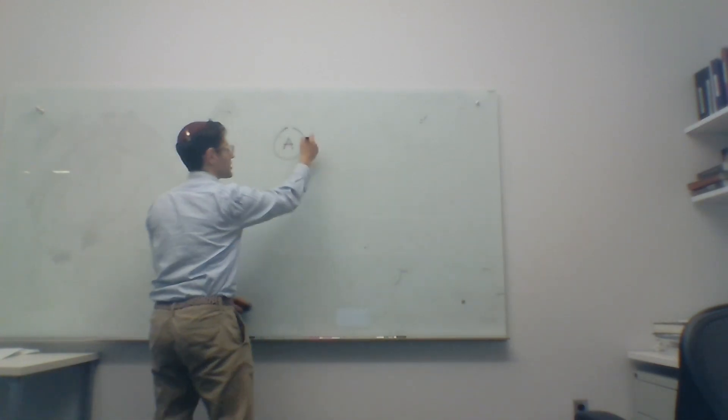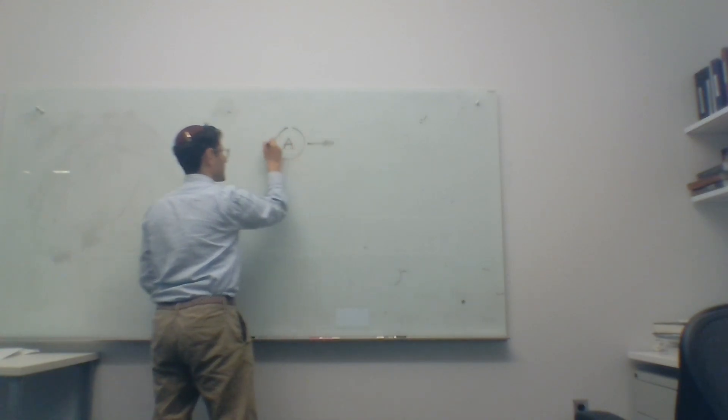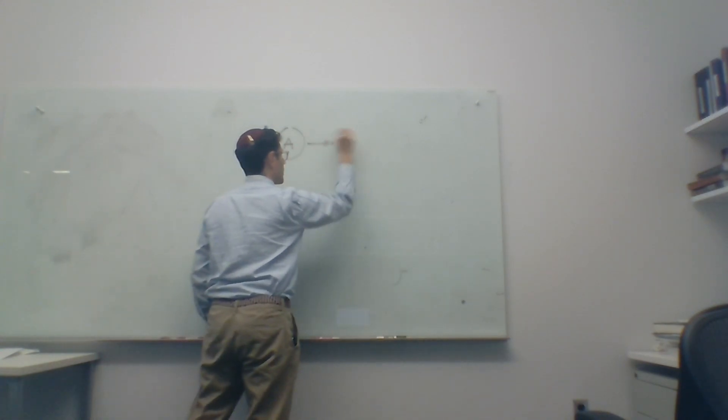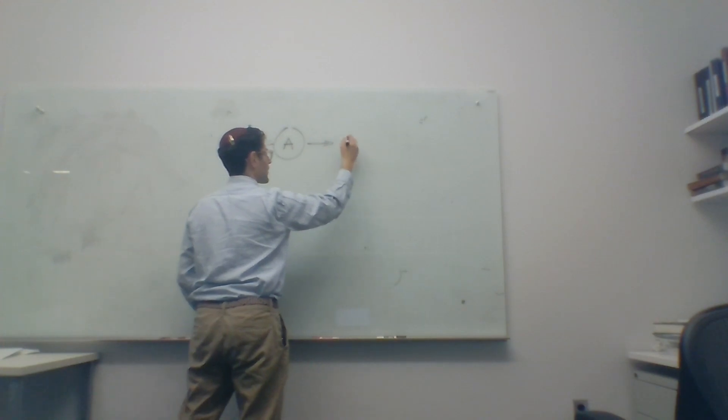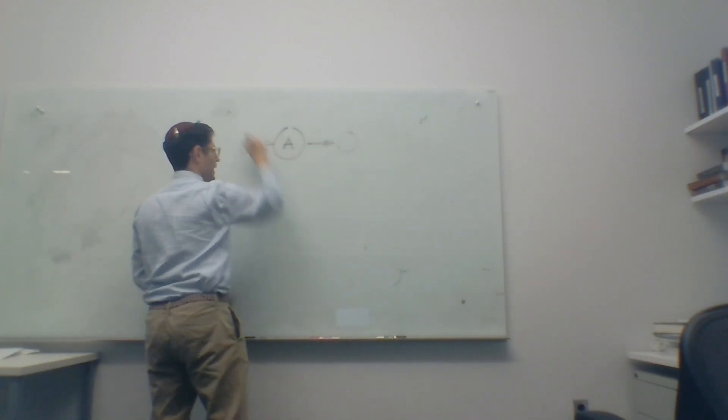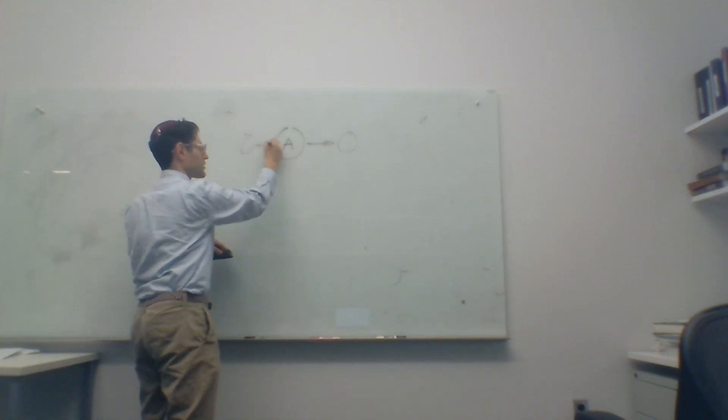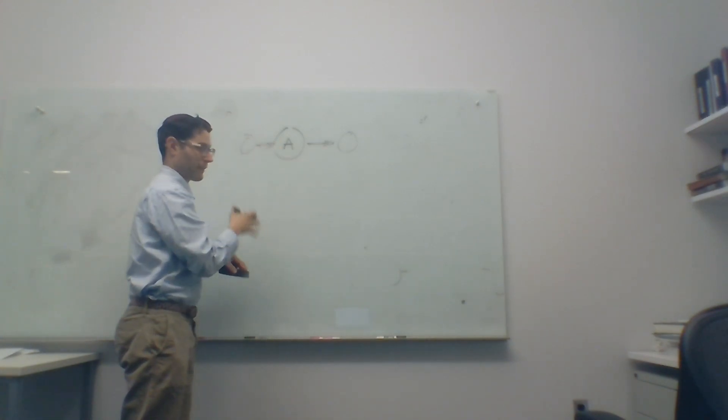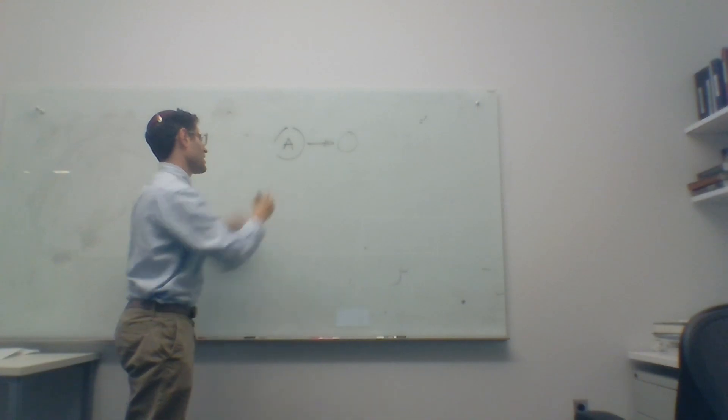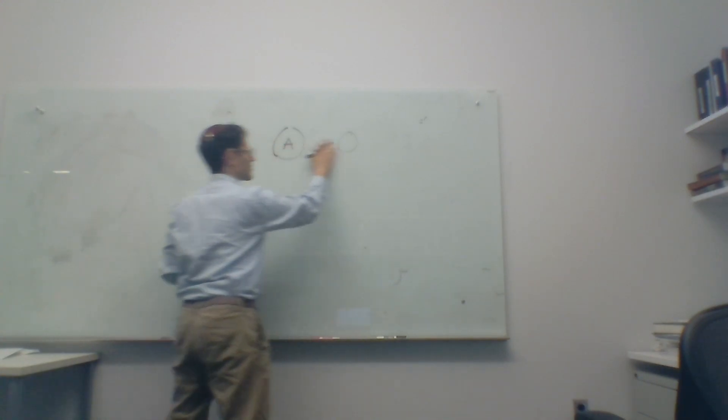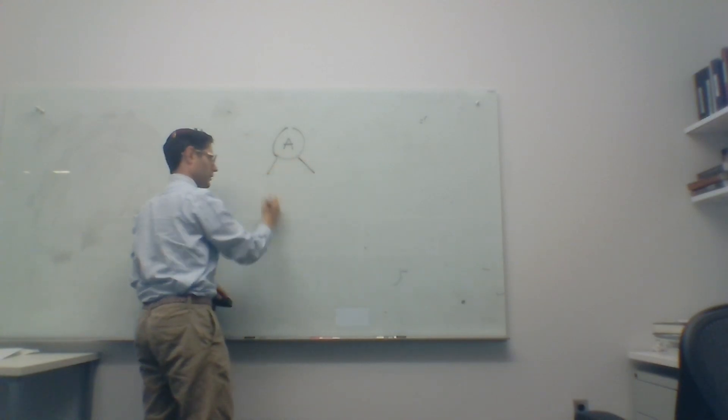Now rather than having items before or after a node like we would in a list, instead the other items in the tree are connected by branches or links to other nodes. So let's go ahead and write B and C into there.